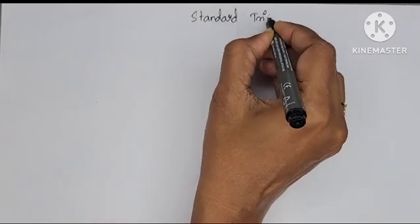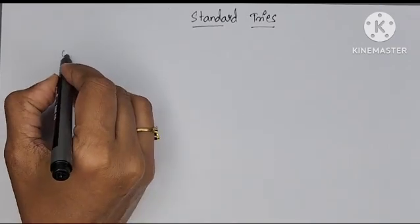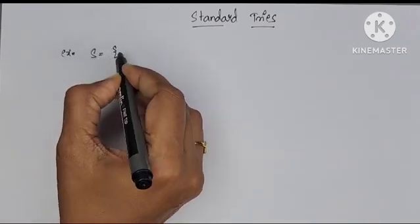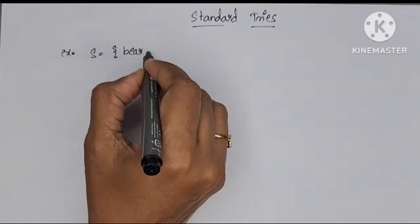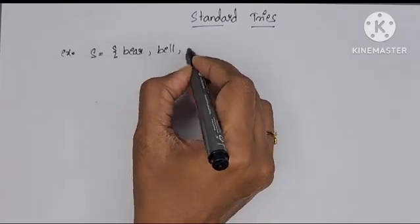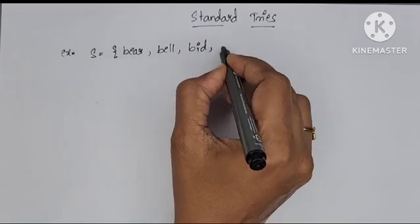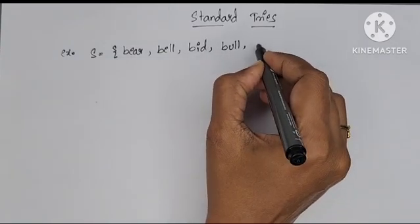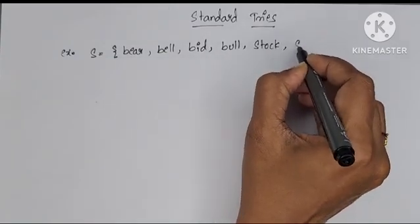We will see what is standard try and how to store strings in standard tries. We will take one example. With that example I will explain it. Set of strings I am going to take: bear, bell, bit, bull and stock, stop.